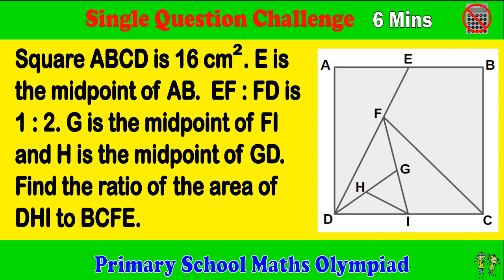Square ABCD is 16 cm squared. E is the midpoint of AB. CF to FD is 1 to 2. G is the midpoint of FI, and H is the midpoint of GD. Find the ratio of the area of DHI to BCFE.